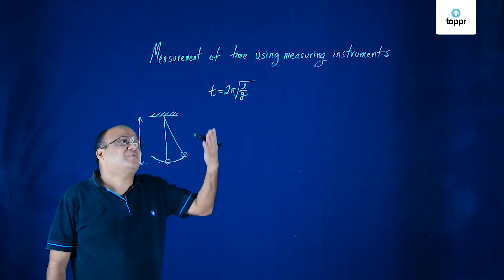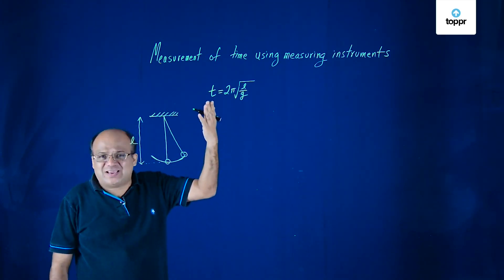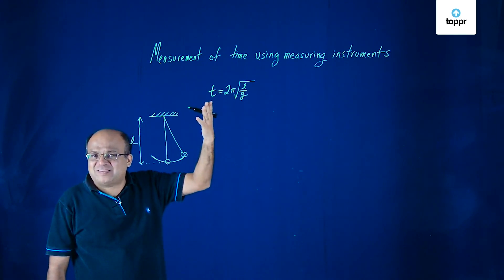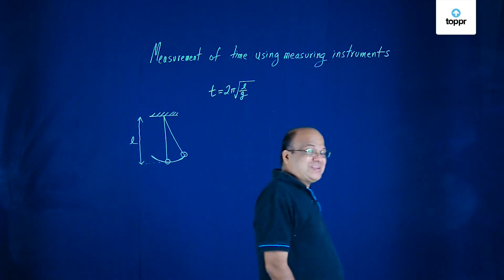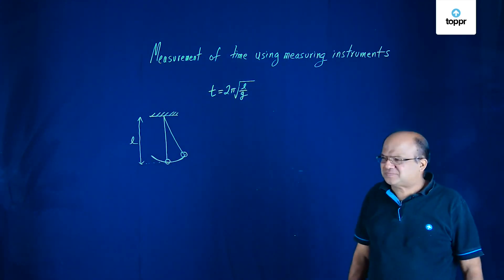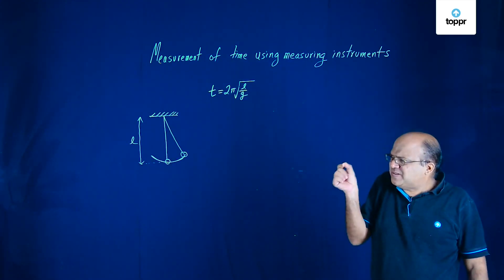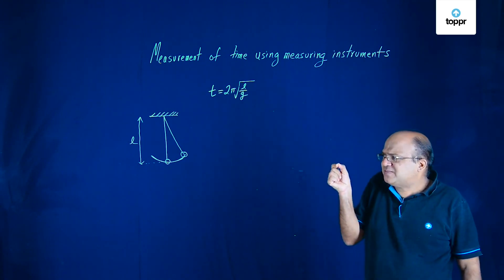When you learn SHM chapter we will derive this formula. In dimensional analysis also we derive this formula T = 2π√(l/g). So this is the principle of working of a simple pendulum.